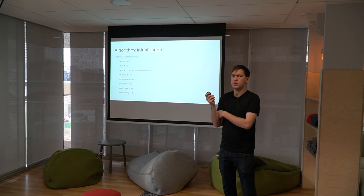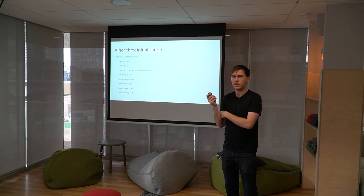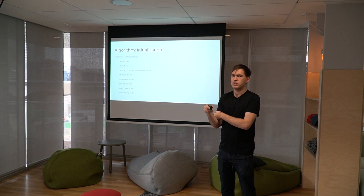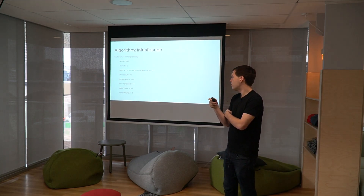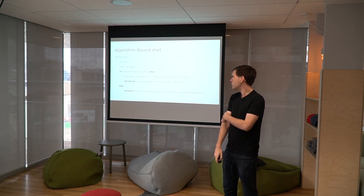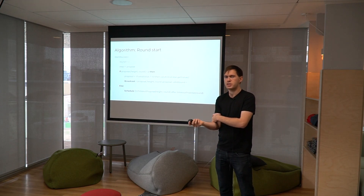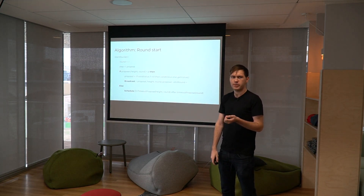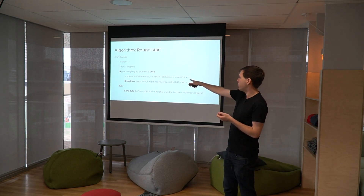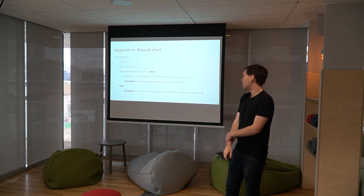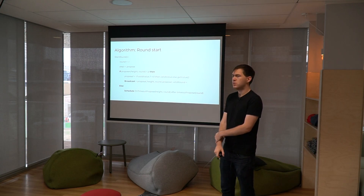Locked value and locked round are respectively the value a particular process has locked on and the round at which it last locked. Once a process is locked on a value, it won't commit to any other value. Valid value and valid round are the last possible decision value and the round in which it was seen. To start a round for some round number r — which starts at zero and increments monotonically — we store r in round and start at the proposed step. If our node is the proposer for this round, determined by calling proposer(height, round), we proceed accordingly.